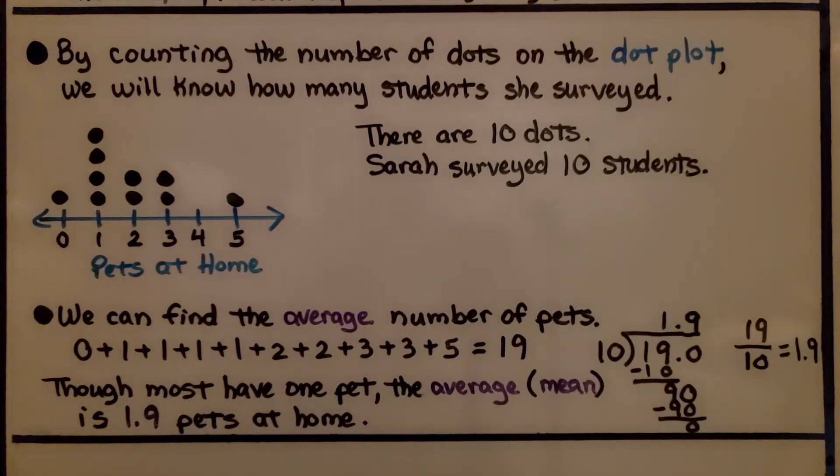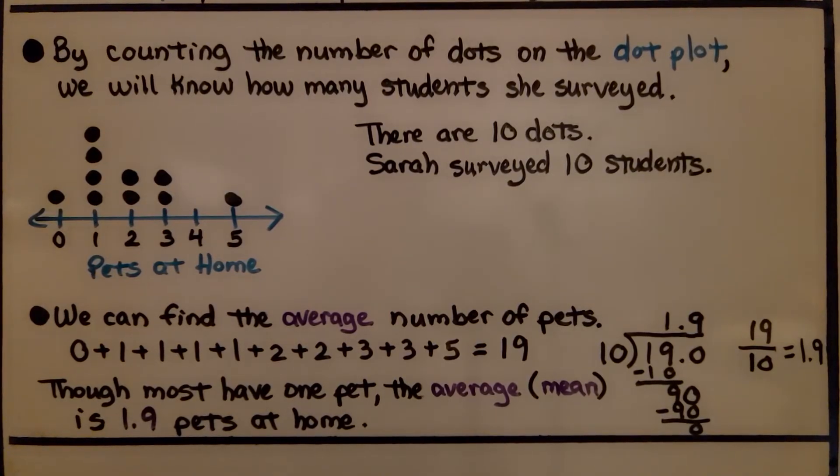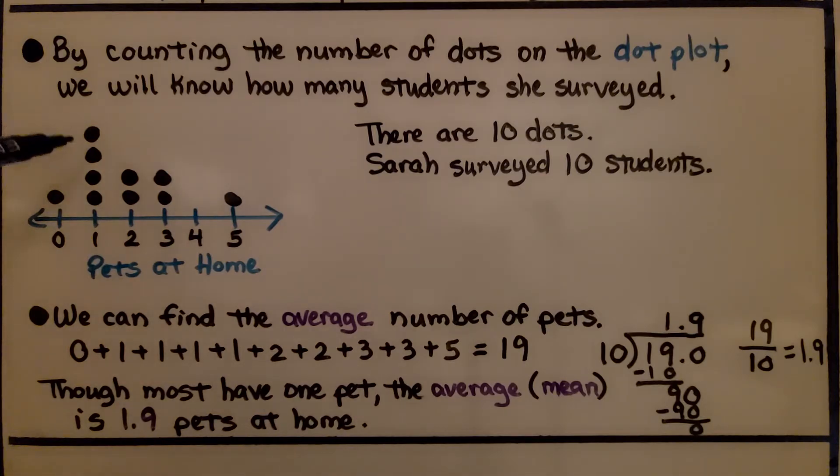There's other information that we can get by looking at the dot plot. By counting the number of dots on the dot plot, we'll know how many students she surveyed. There's 1, 2, 3, 4, 5, 6, 7, 8, 9, 10 dots. That means Sarah surveyed 10 students.